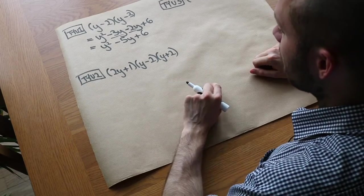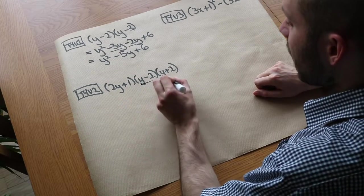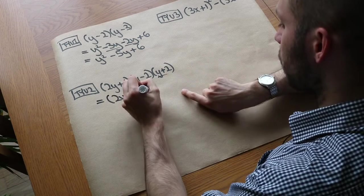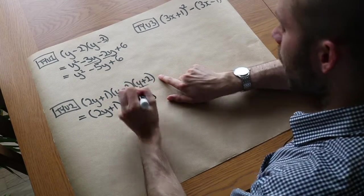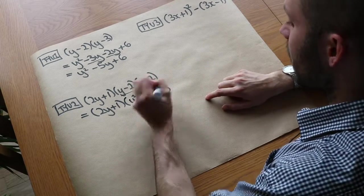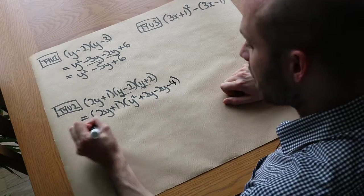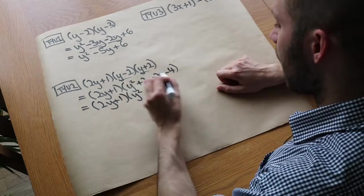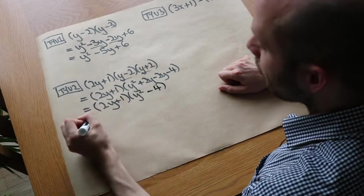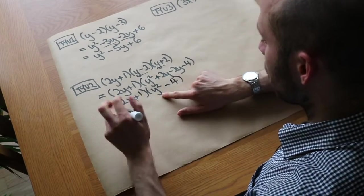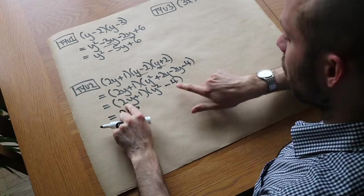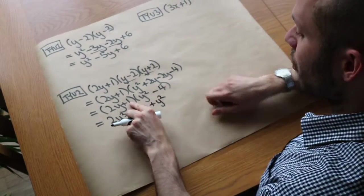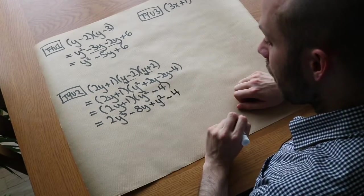Question 2: expand (2y + 1)(y − 2)(y + 2). First expand the last two brackets. y times y is y squared. y times 2 is 2y. Minus 2 times y is minus 2y. Minus 2 times 2 is minus 4. Simplifying: 2y minus 2y cancels, leaving y squared minus 4. Now expand (2y + 1)(y squared minus 4): 2y times y squared is 2y cubed. 2y times minus 4 is minus 8y. 1 times y squared is plus y squared. 1 times minus 4 is minus 4. Nothing collects, so the final answer is 2y cubed plus y squared minus 8y minus 4.